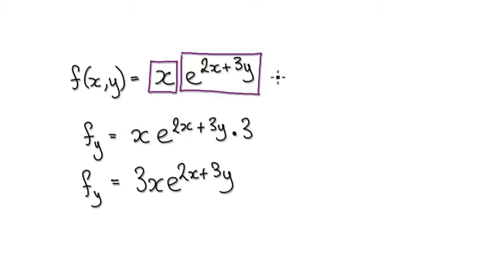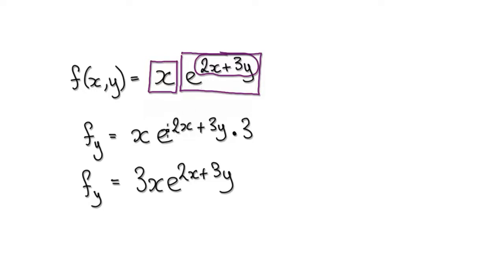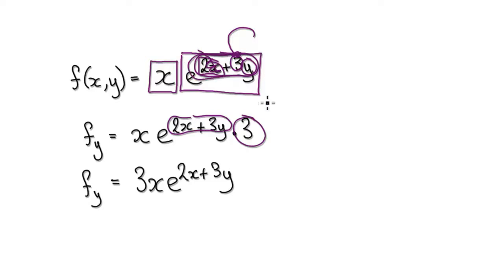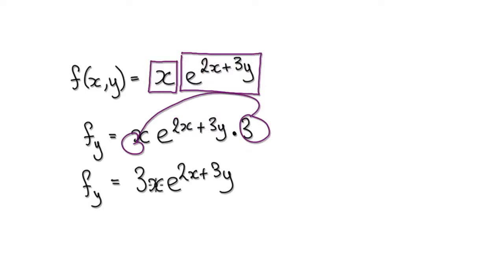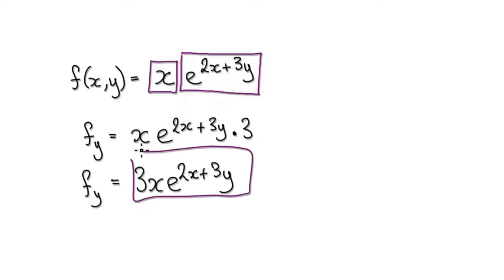So differentiating with respect to y: this is just a constant. And then when you come to differentiate the exponential, imagine the bubble — e to the power of the bubble differentiates to e to the power of the bubble, but then you've got to times the derivative of the bubble itself, which would be just 3. Because y is a variable this time, x is a constant, so the x term disappears. Differentiating the bubble itself gives you 3. So now tidy this up — that will then give you this.